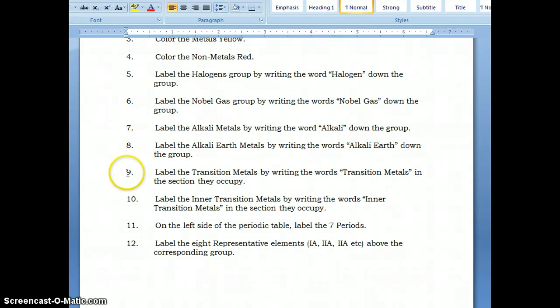Then number nine, you are going to label your transition metals by writing the words transition metals in the section that they occupy on the periodic table.